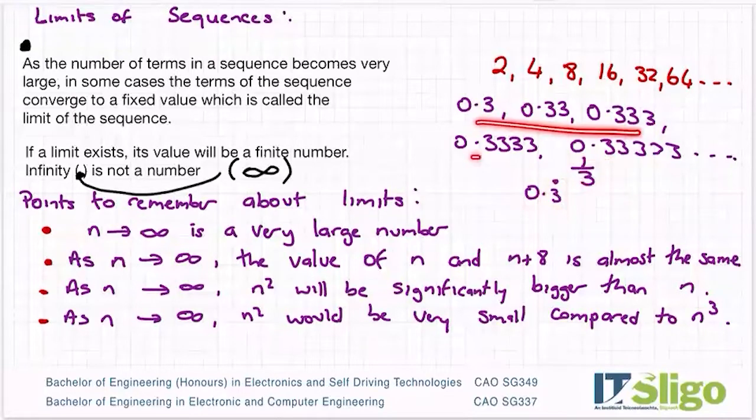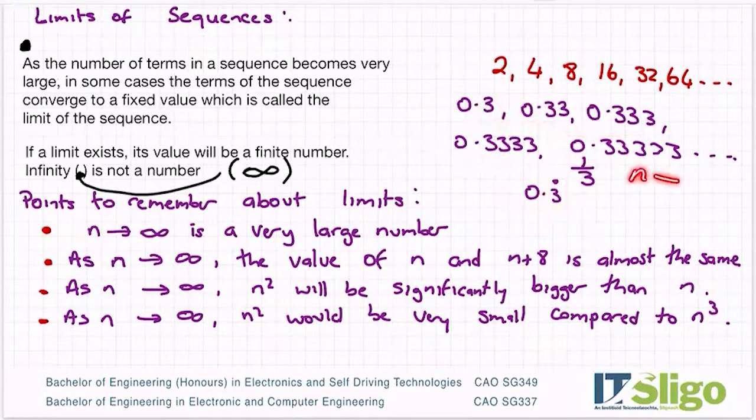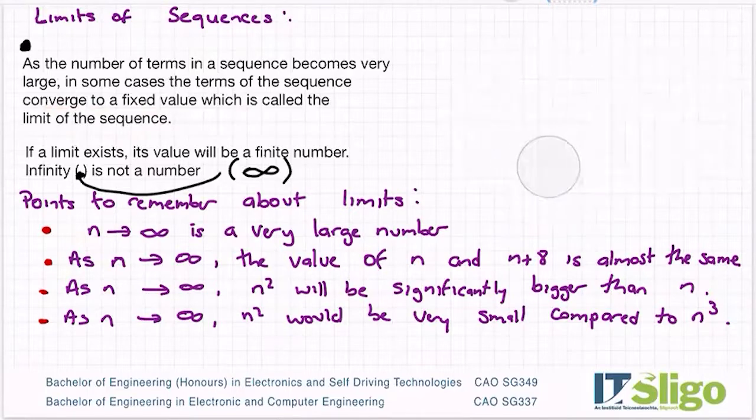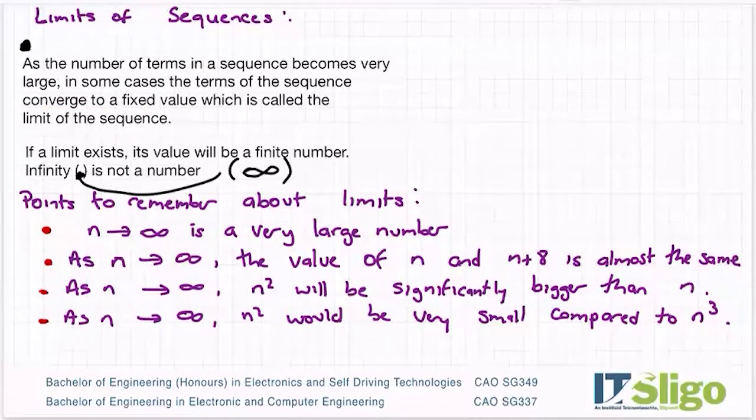So this particular sequence, as the number of terms gets bigger, that value gets closer to a third. So it converges to a fixed value. The limit of this sequence would be a third, and we'll do a few examples of looking at different terms and seeing, do they have a limit? So important points now to remember about limits.